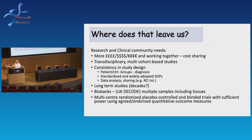We do need long-term studies, and we need biobanks — collecting samples, banking them and using them in a variety of studies. This is not just blood; it should include other tissue samples and body fluids as well. And ultimately, we need placebo-controlled blinded trials that are sufficiently powered, using agreed and endorsed quantitative outcome measures, to really know that we've been able to treat and hopefully cure ME.